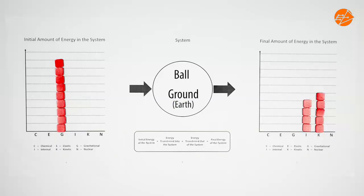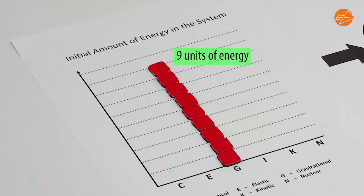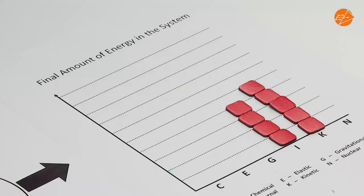Remember that we considered the ball together with the ground as our objects of interest and assumed negligible air resistance. Therefore, no energy was transferred to the surroundings during the event. Energy was only transferred between stores within our objects of interest — the ball and the ground. No energy was created or destroyed. There was initially 9 units of energy, all in the gravitational potential store. At the final state, we still had 9 units: 4 units in the internal store and 5 units in the kinetic store.